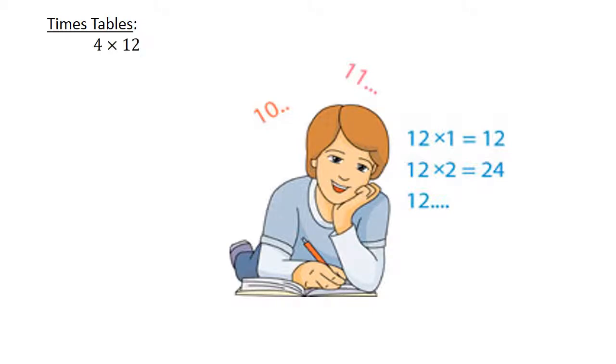4 × 12 is equal to 48. 8 × 7 is equal to 56.